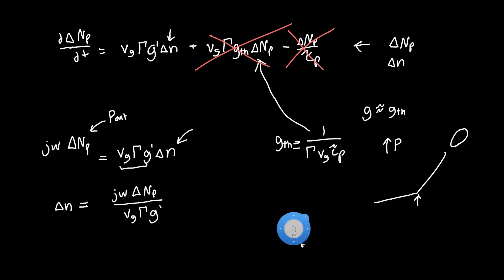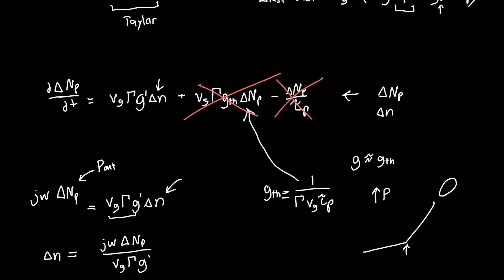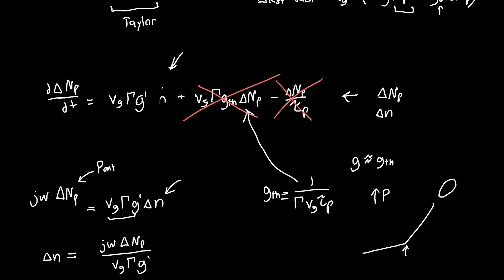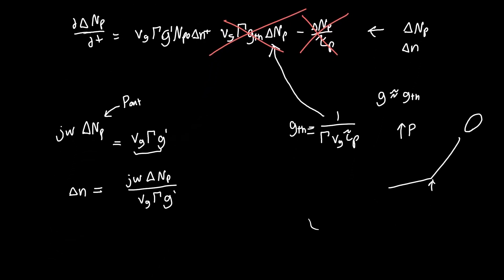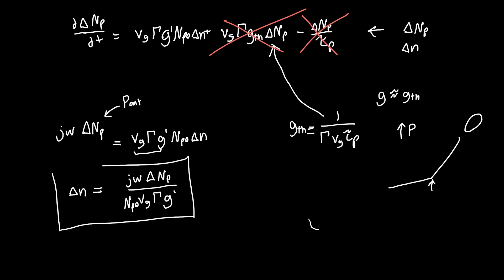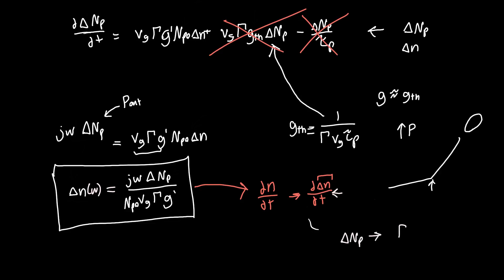There's a correction: an N_P0 term was dropped when rewriting the equation, so there should be an N_P0 in front of the delta_N term. Rewriting with that correction, delta_N equals j·omega·delta_NP divided by (V_g·Gamma·G-prime·N_P0), where N_P0 is our DC number of photons. We can now plug this expression in anywhere we see delta_N in our carrier rate equation — once we transform it to the small-signal form — and solve for everything in terms of delta_NP to obtain the output power.